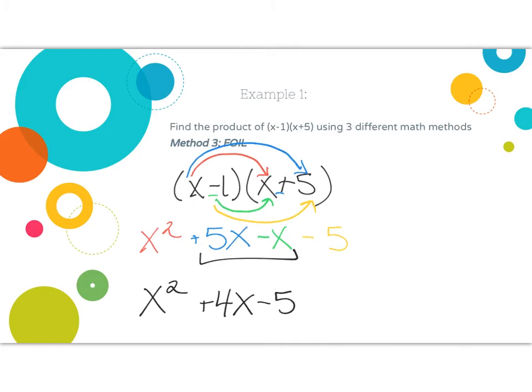So we've shown three different methods. Algebra tiles takes the most work because you have to draw that big chart. I like the chart method because it's quick and easy and is a reminder of multiplying each term. FOIL is the most common and I'll keep using it to expand terms. However, you are free to use any of these three methods.